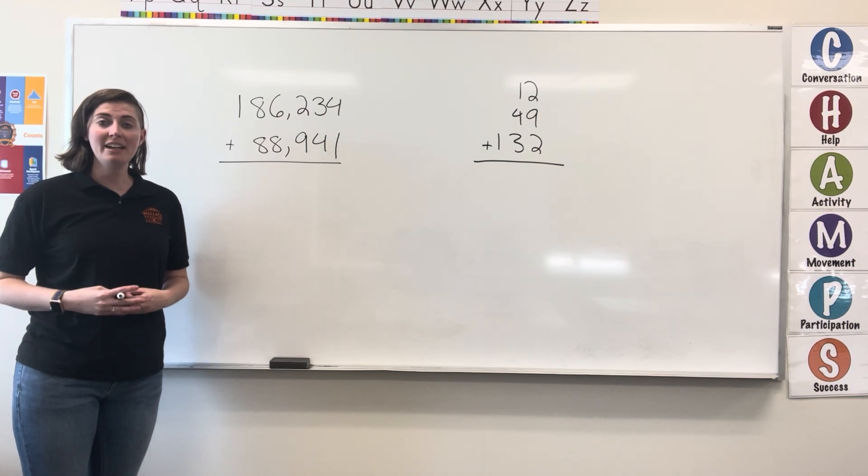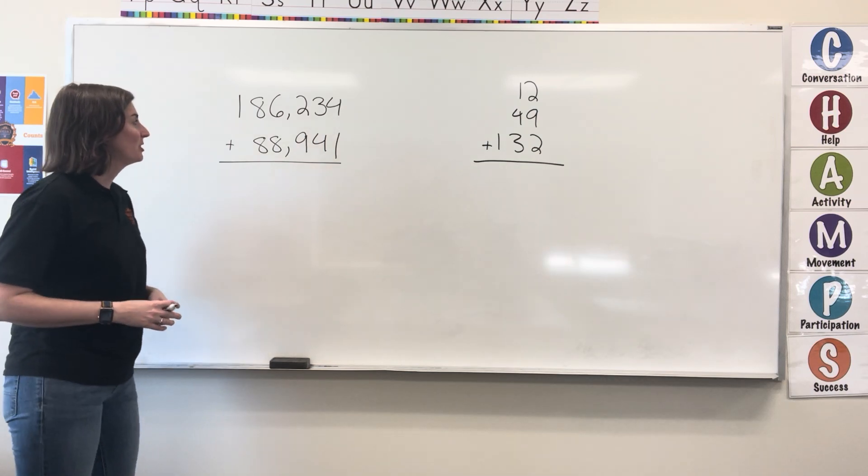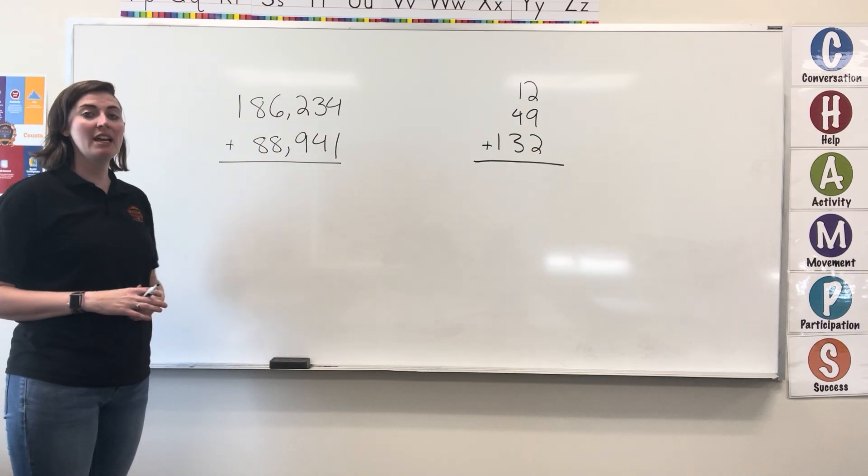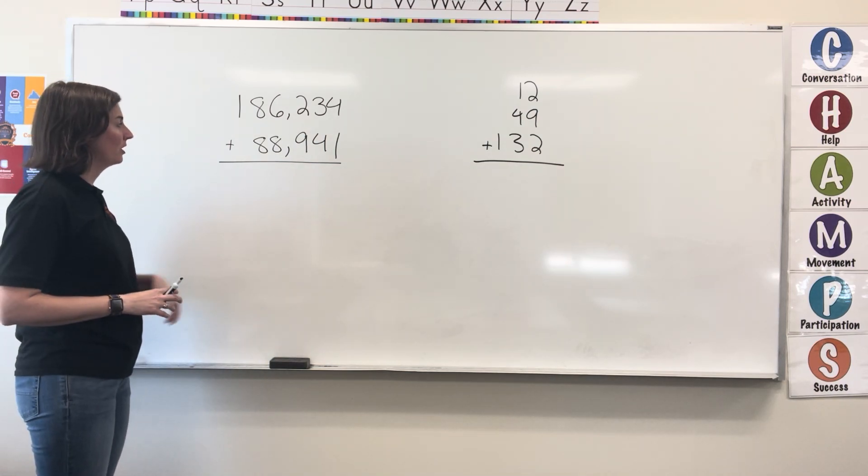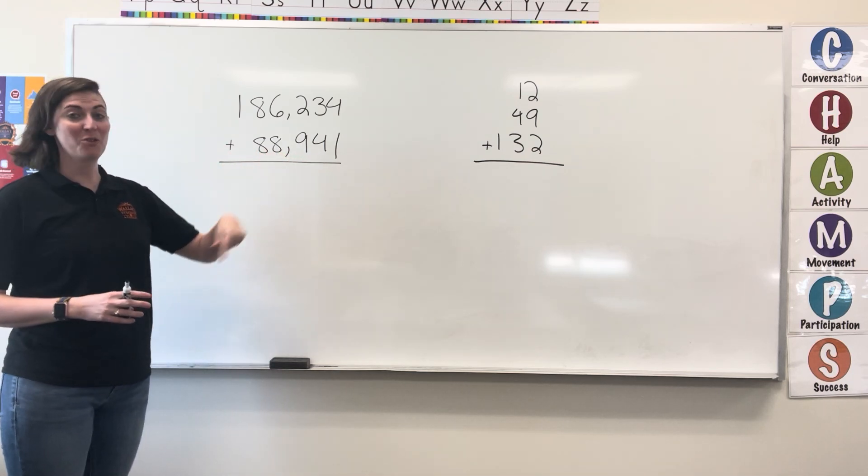In this video, we're going to be adding numbers that are already stacked according to place value. In our first example, we have 186,234 being added to 88,941.